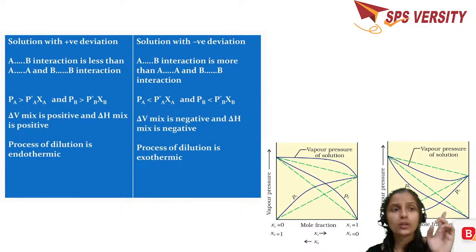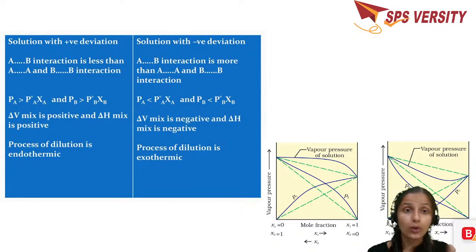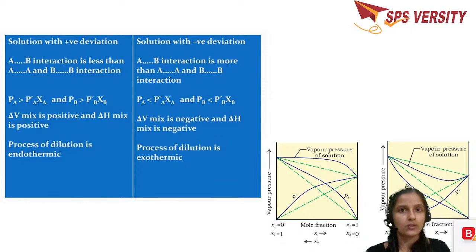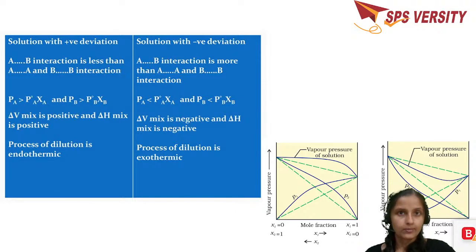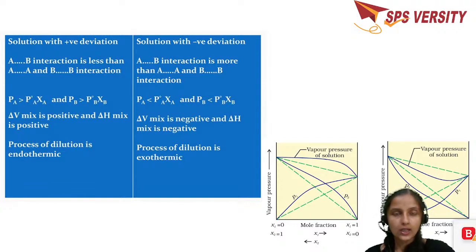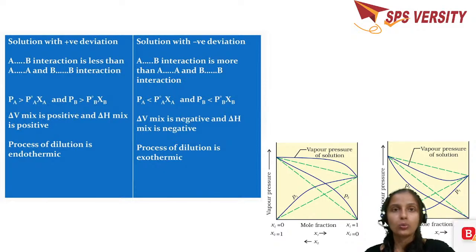Non-ideal solutions fall into two categories: solutions with positive deviation and solutions with negative deviation from Raoult's Law. In positive deviation, if you mix 10 ml and 10 ml, before mixing you have 20 ml, but after mixing you might get 21 ml — so delta V mixing is positive, meaning volume has increased.